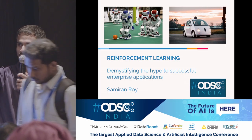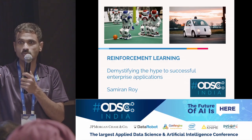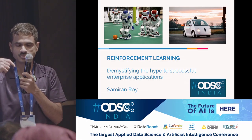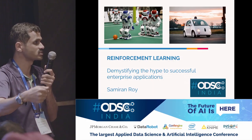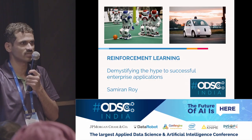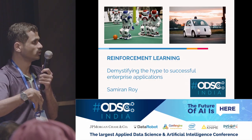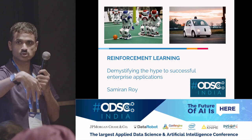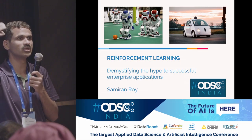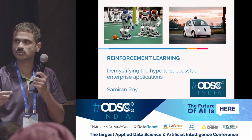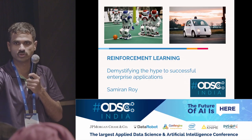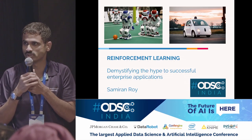I'll not steal the thunder from Samiran. He will talk a lot about how this dynamic nature comes in — how the feedback itself is dynamic, how the environment itself is dynamic, how the environment gets affected by the moves you've made. In the chess example, when you make a move, the environment — the chess game — has also changed, and you have to react. All of this dynamism is what makes reinforcement learning very successful and appropriate for these kinds of examples. So with that, Samiran, please.